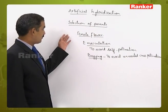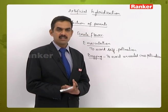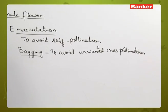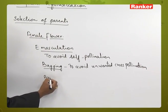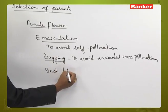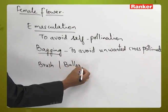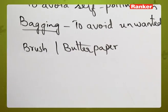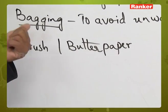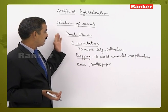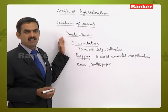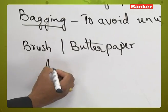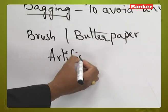The pollen grains from the selected male parent are then collected with the help of either a brush or butter paper, and these pollen grains are gently brushed onto the stigma of the female parent's flower. This constitutes the actual artificial hybridization step.